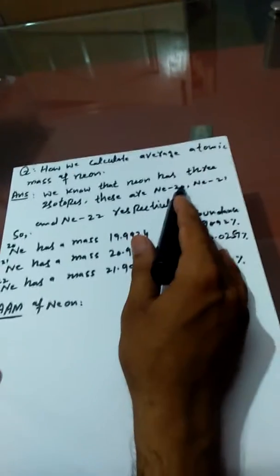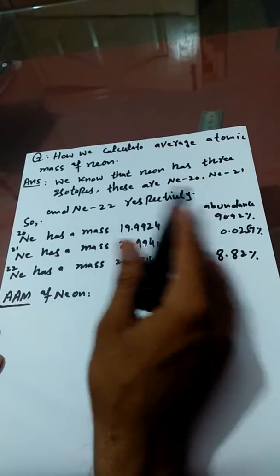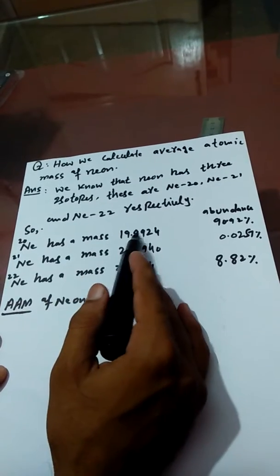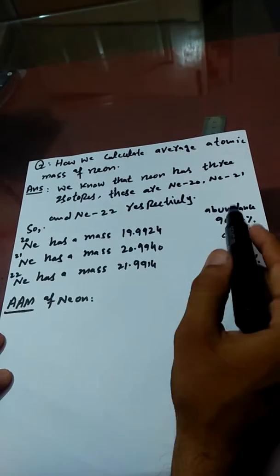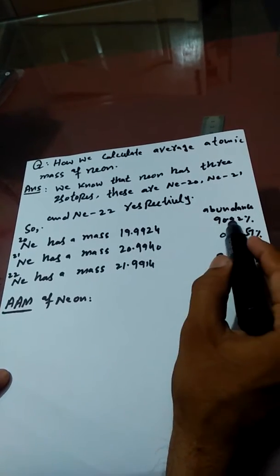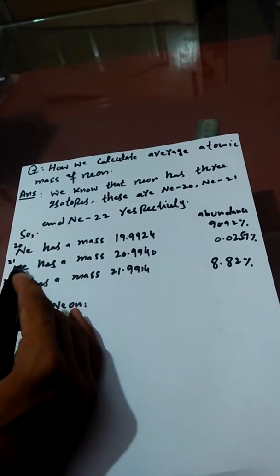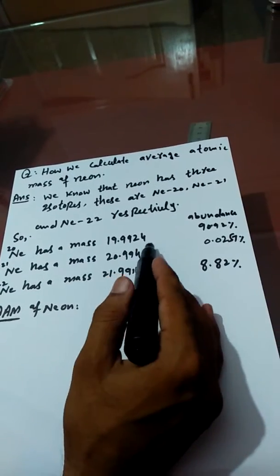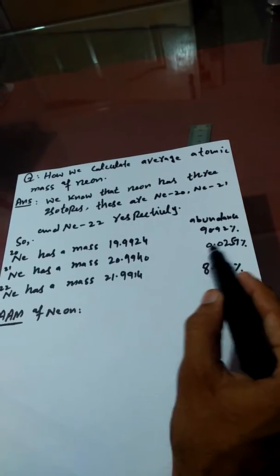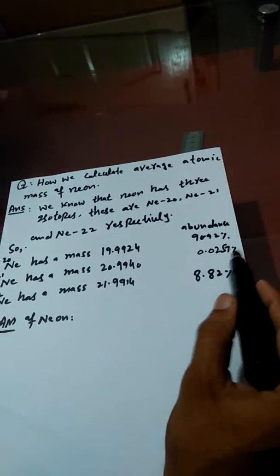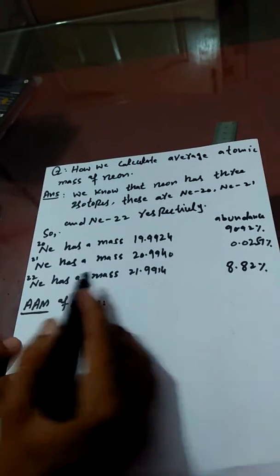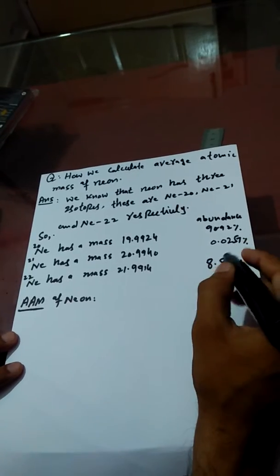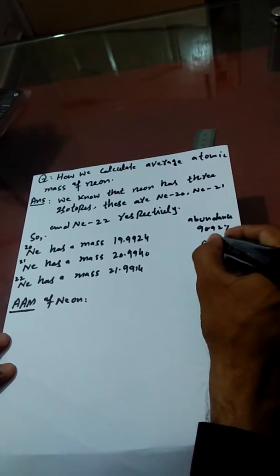These are Neon-20, Neon-21, and Neon-22 respectively. Neon-20 has a mass of 19.9924 AMU with an isotopic abundance of 90.92%. Neon-21 has a mass of 20.9940 AMU with an isotopic abundance of 0.257%. Neon-22 has a mass of 21.9914 AMU with an isotopic abundance of 8.82%.